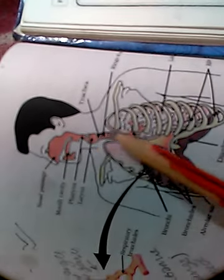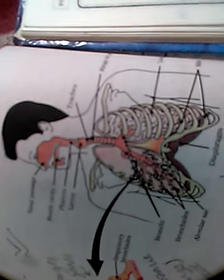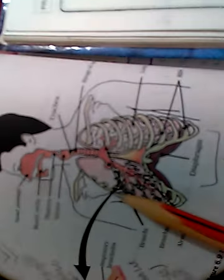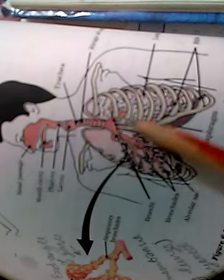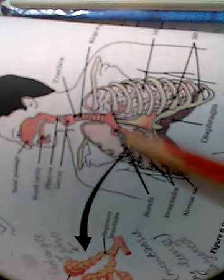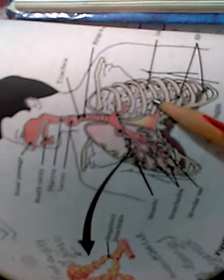The internal intercostal muscles and external intercostal muscles are involved. Air enters through the nasal cavity, and the diaphragm — which forms the air passage cavity — expands, increasing the volume in the thoracic cavity and drawing air into the lungs.